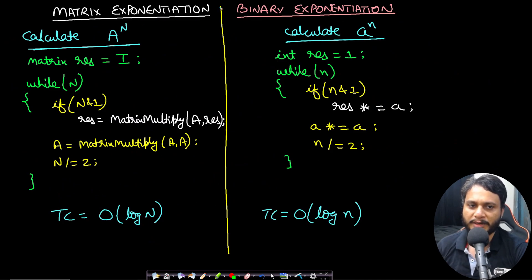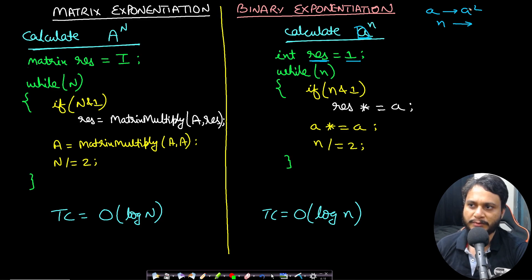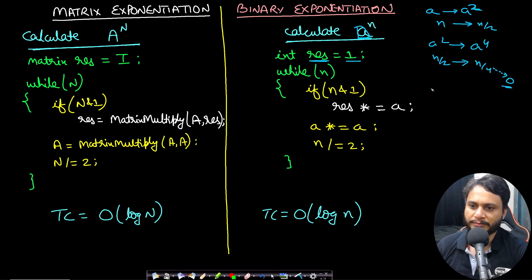Now let's look at how to calculate matrix exponentiation using the concept of binary exponentiation. In binary exponentiation, to calculate A to the power of N, we start with value 1 and reduce N by squaring the base and halving the exponent repeatedly until N becomes 0.